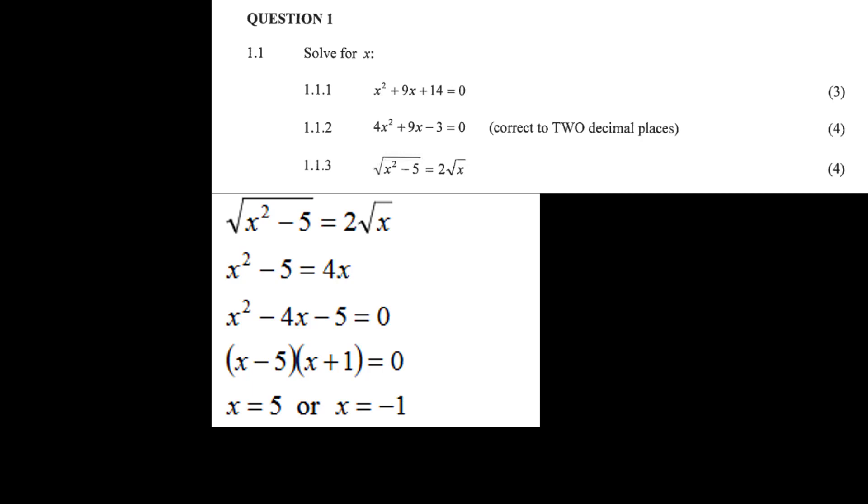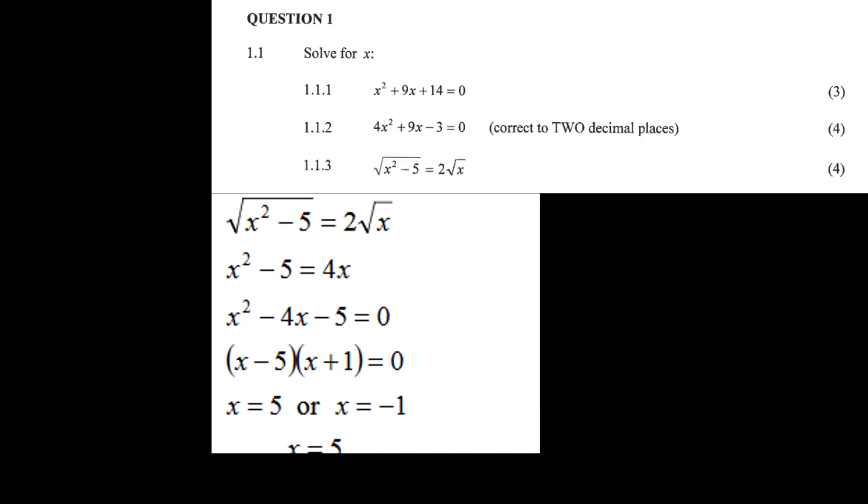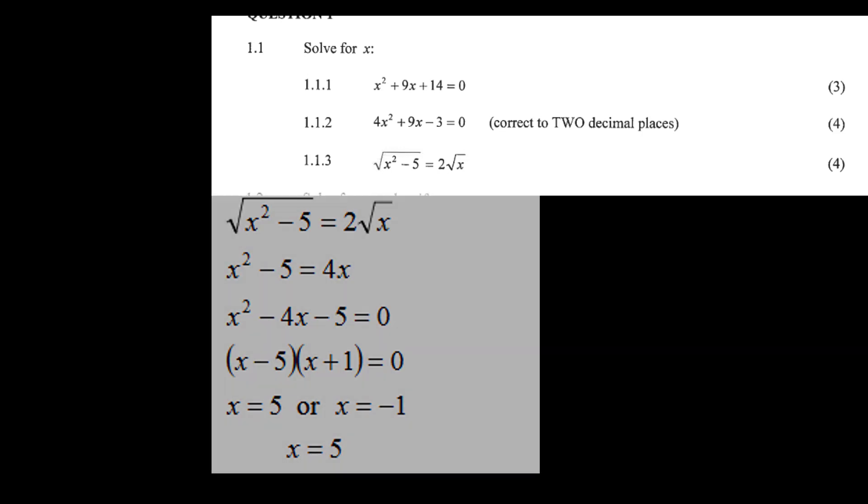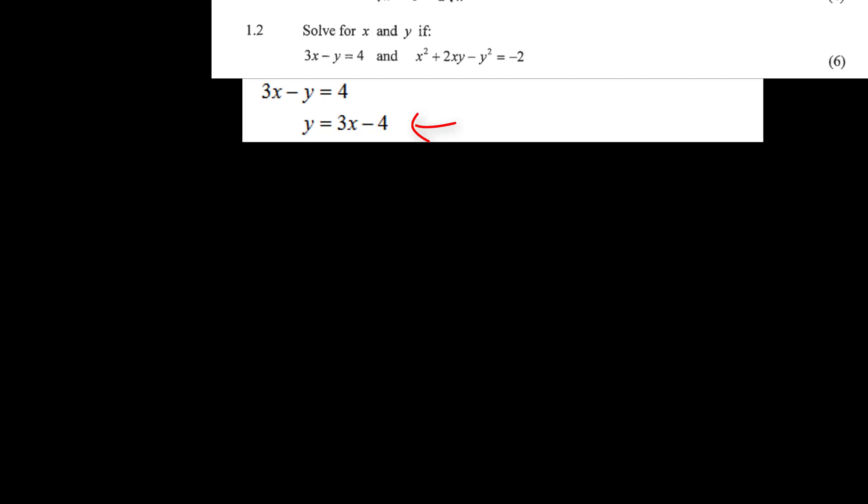Substituting those back into the original equation shows that only x equals 5 is a valid solution. For Question 1.2, worth six marks, this is essentially a simple substitution — you just need to focus on getting the algebra right. Take the first equation and express it in terms of y: y equals 3x minus 4.